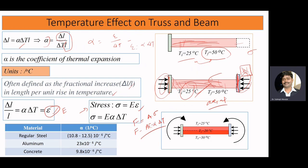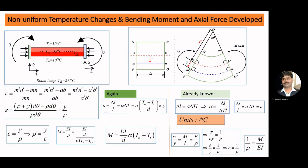If a beam is subjected to non-uniform temperature rise — for example, at the bottom we have 40°C and at the top we have 30°C — then the mean temperature is 35°C. You will observe this member is subjected to both axial deformation and bending deformation. The beam will experience axial force as well as bending. We are going to see how much bending moment and axial force will develop due to non-uniform temperature changes.